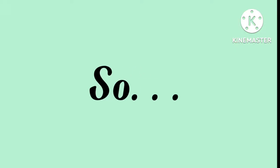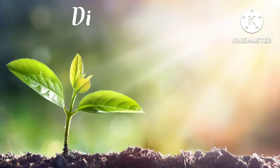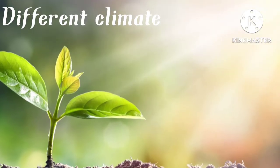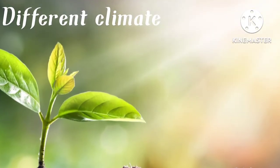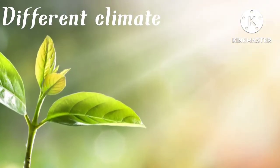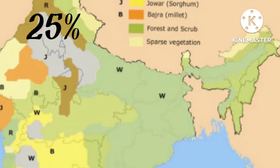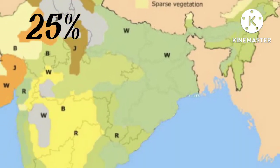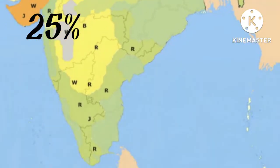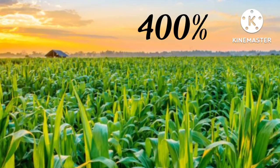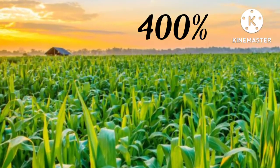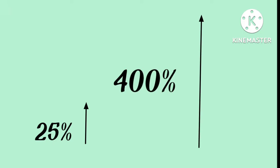We know that for different crops we need different climatic conditions. Since 1960, we have increased our cultivated area by 25% — that is one-fourth of the total — yet achieved 400% more crops. So how does this happen? We only increased the area by 25% but achieved four times more crops.